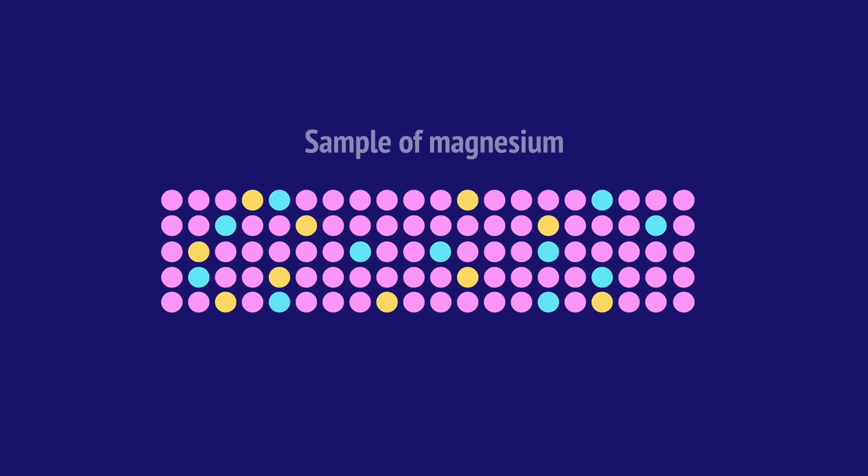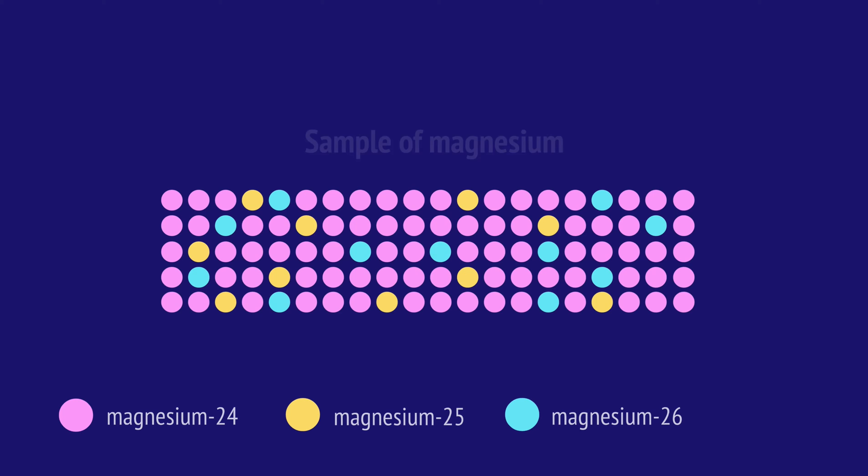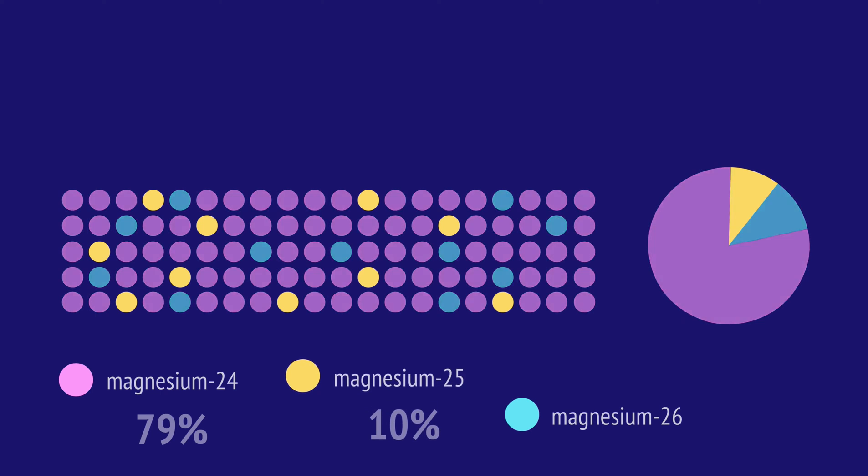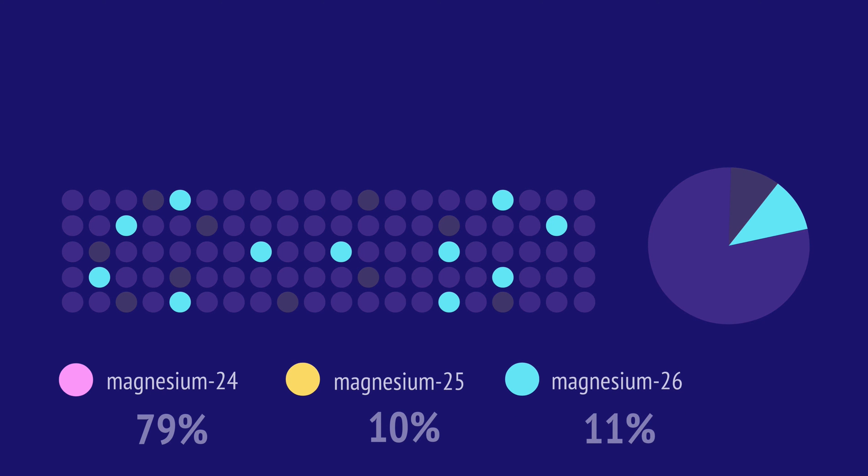Whenever we take a sample of magnesium, we'll have these three isotopes present. We find that on average 79% are magnesium 24, 10% are magnesium 25, and 11% are magnesium 26.